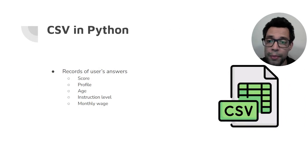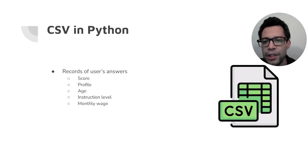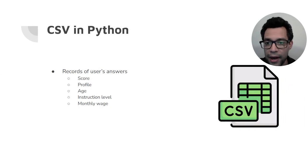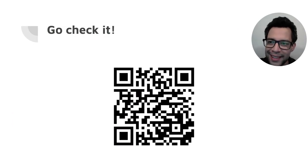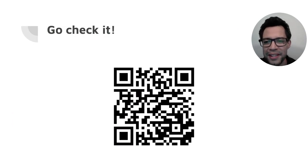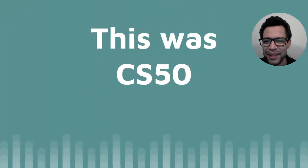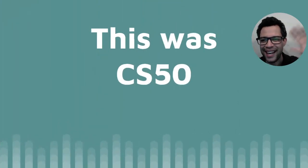The user's score, profile, instruction level, age, and monthly wage are recorded in a CSV file for further analysis. Go check it using this QR code or the link in the description of this video. Thank you. This was CS50. Bye.